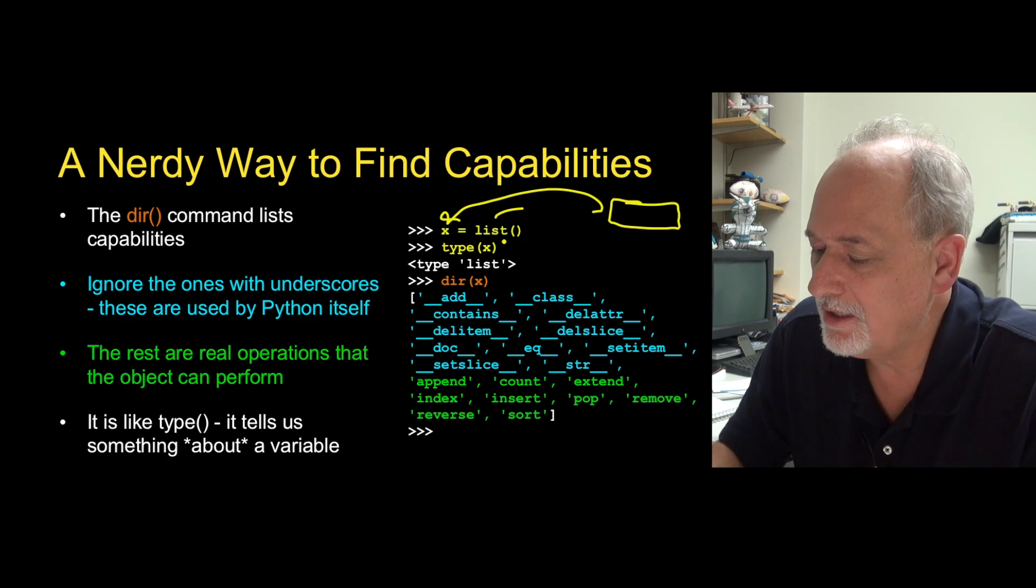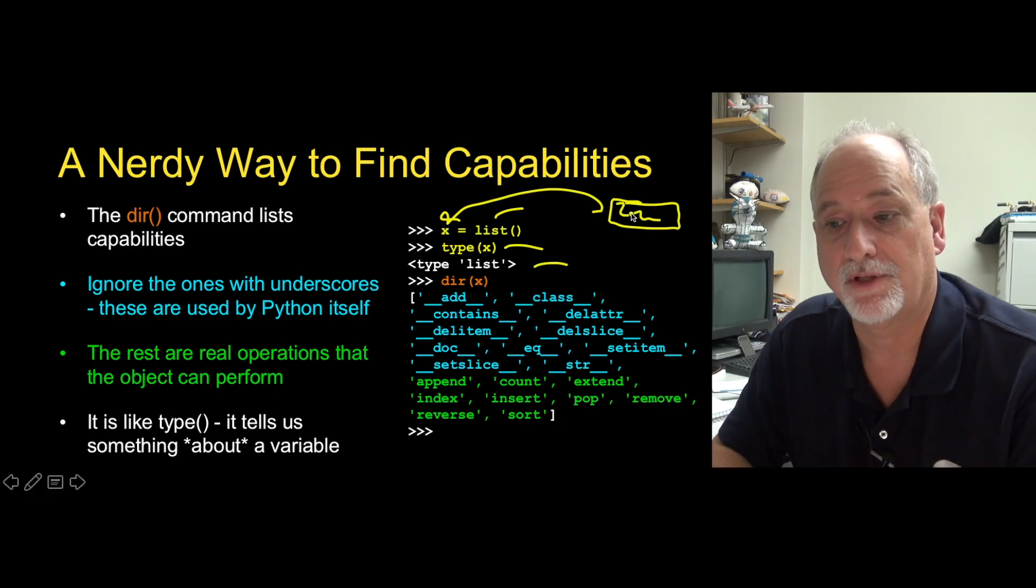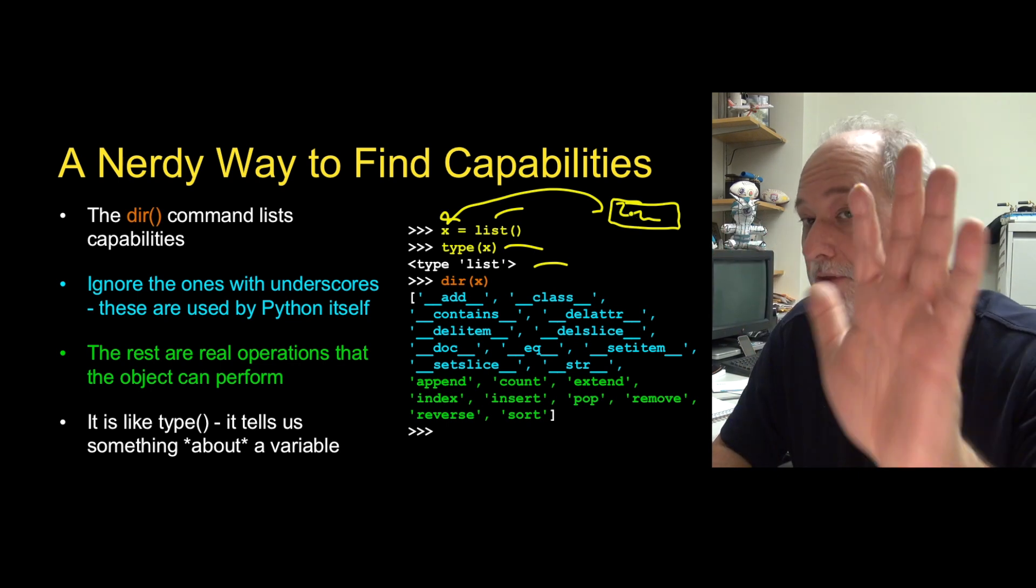So then we say, hey, what is in x? What kind of thing is x? Well, it's a list. This is a thing. It's a list type. Lists have lists of things in them. And, you know, use append and all the things we've been doing before. They're just objects.